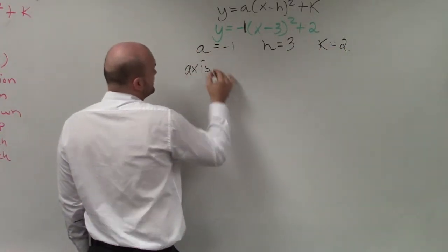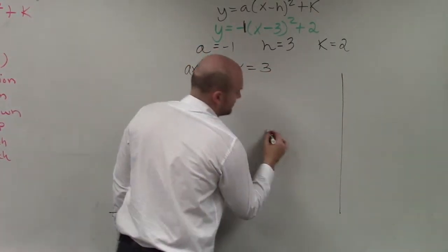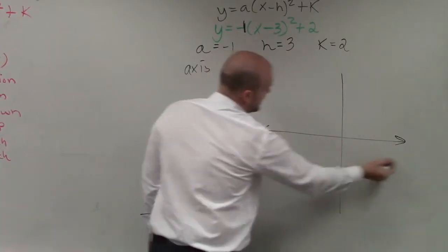So now that I've labeled everything, I can say my axis of symmetry is x equals 3. So to graph that, I go on my x-axis, and I go over to 3.